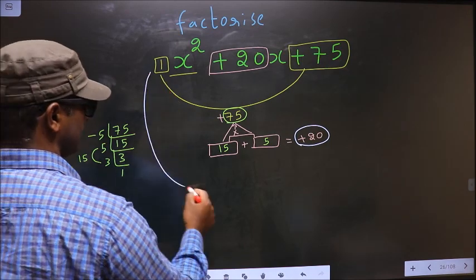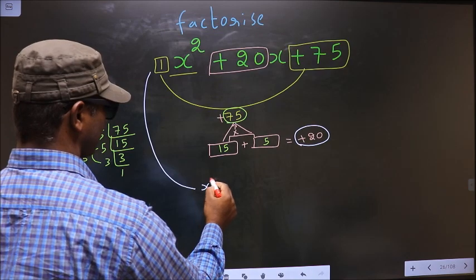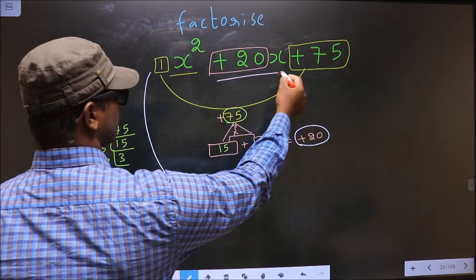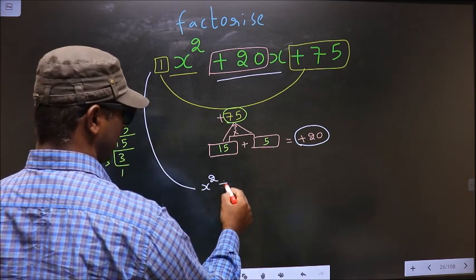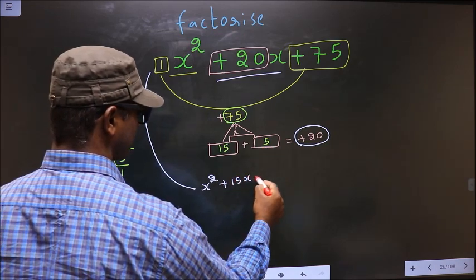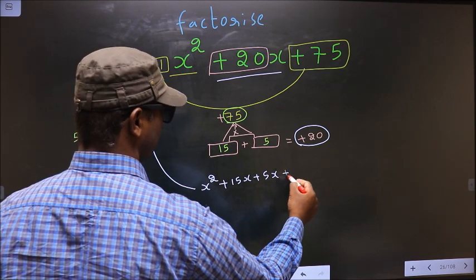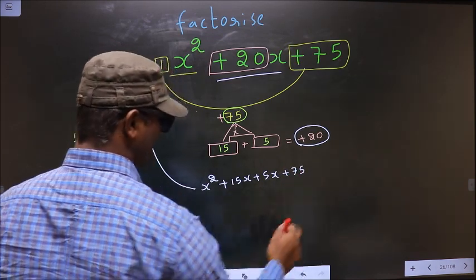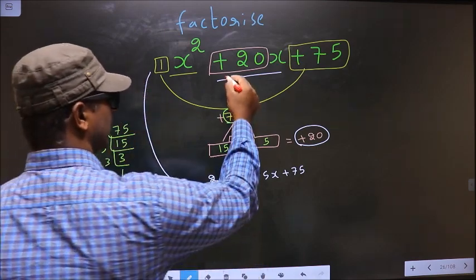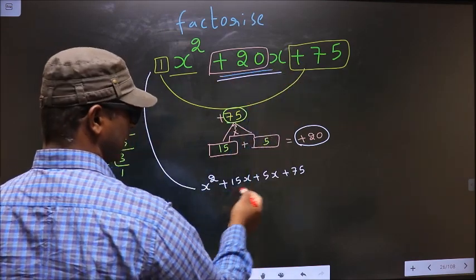Now you change this to, in place of 20x, now you write this: that is plus 15x plus 5x plus 75. Did you understand? In place of 20x, I have written this.